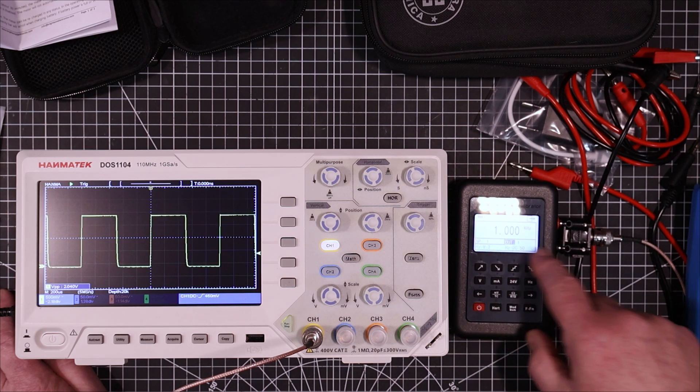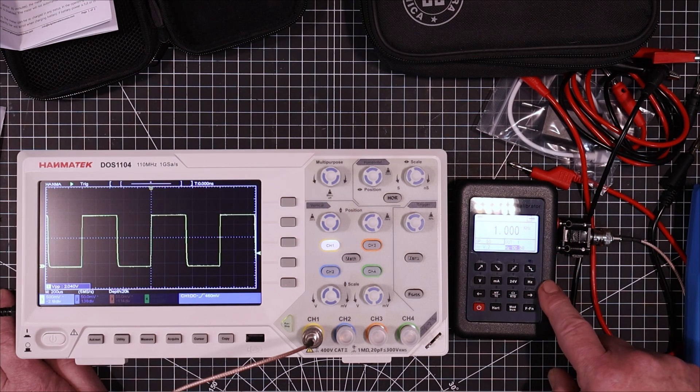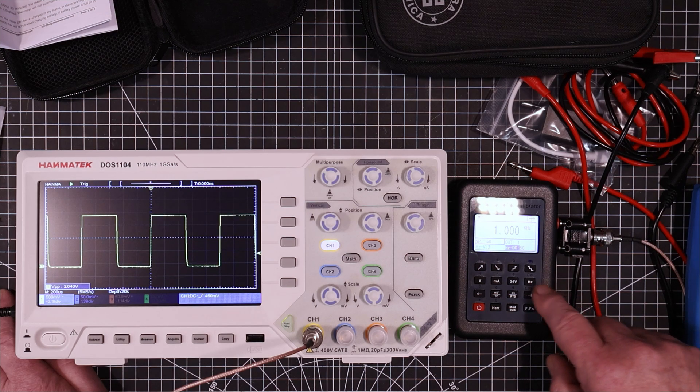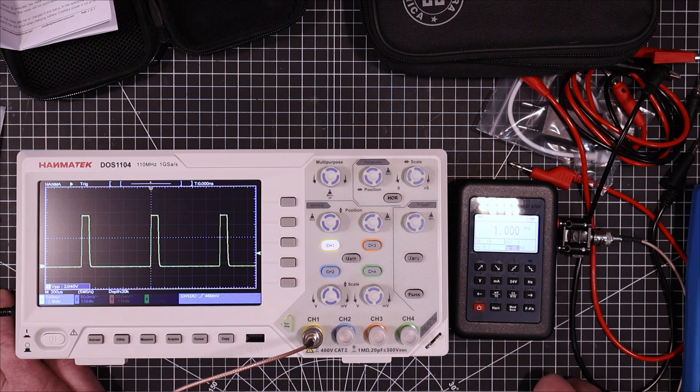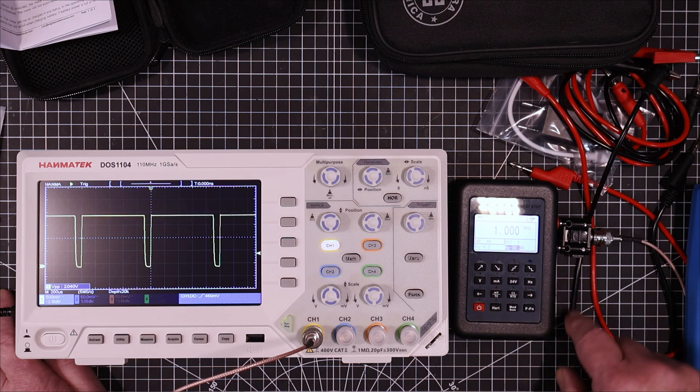Now we can see what some of these other things here do. So I think this is the duty cycle. So let's set that to 10 again. Okay. And set it to 90. Nice.